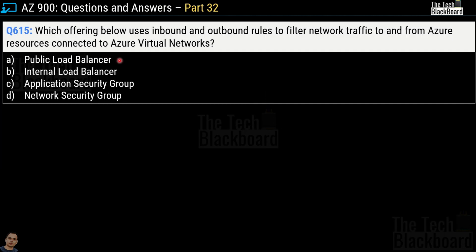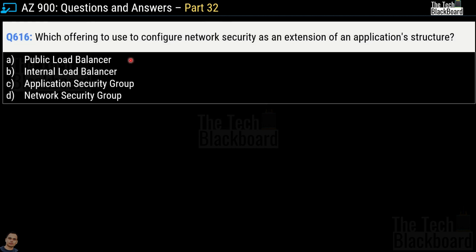Question 615 asks which offering uses inbound and outbound rules to filter network traffic to and from Azure resources connected to Azure Virtual Networks. Options include Public Load Balancer, Internal Load Balancer, Application Security Group, and Network Security Group. The correct answer is option D, Network Security Group. Question 616 asks which offering configures network security as an extension of an application structure — the correct answer is option C, Application Security Group.